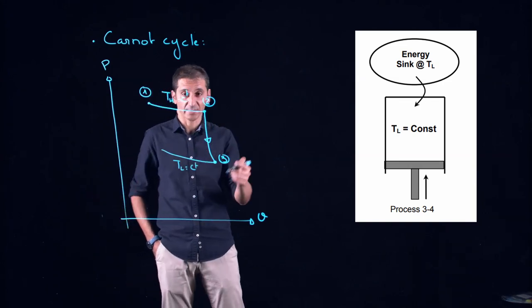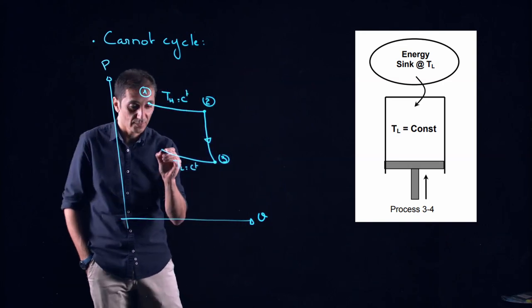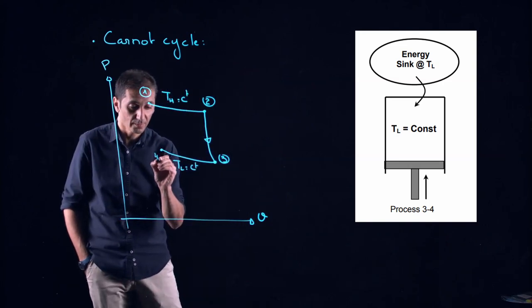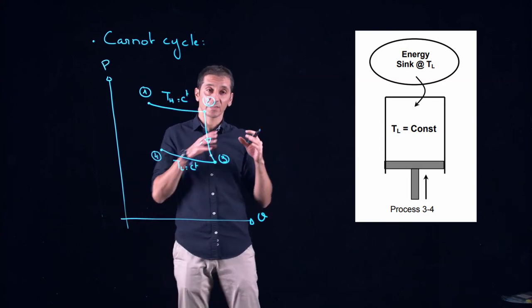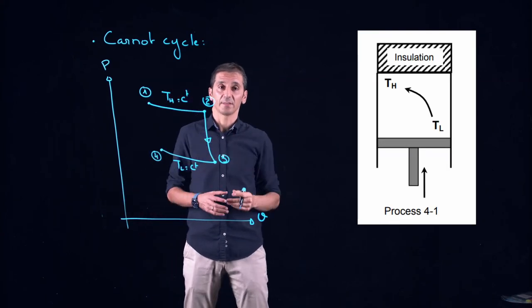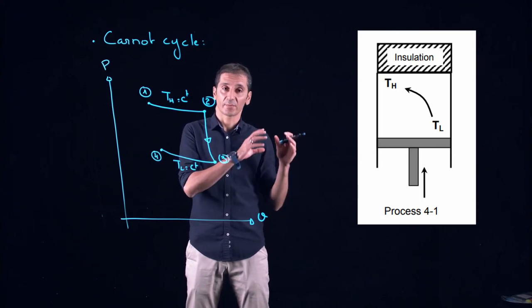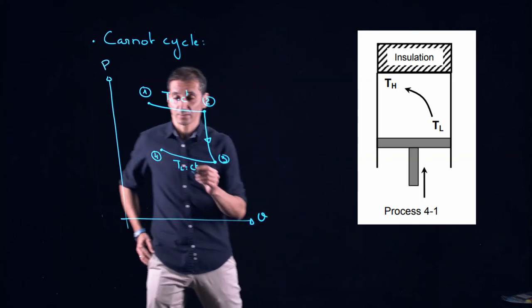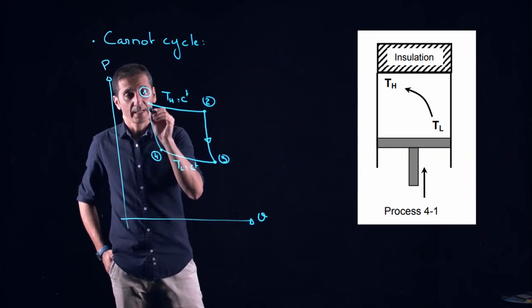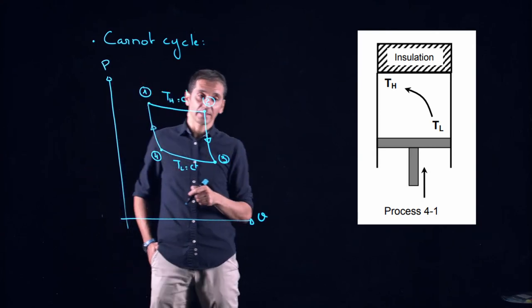Continue, we have to compress the gas to come back to state one, just gives us state four. And to do this what we will do is that we will insulate again the cylinder and we will have the temperature raising from TL to TH in an adiabatic way. We come back to state one and this is an adiabatic compression.